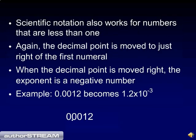Scientific notation also works for numbers that are less than 1. Again, the decimal point is moved to just right of the first numeral. When the decimal point is moved to the right, the exponent becomes a negative number. For example, the number 0.0012 — you move the decimal point 1, 2, 3 spaces to the right this time, and the number becomes 1.2 times 10 to the minus third in scientific notation.